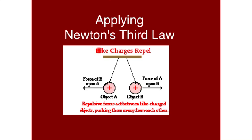We can apply Newton's third law to these situations. Remember, Newton's third law says for every action there is an equal and opposite reaction. Let's think about that in this situation where we have two like charges on object A and object B. Object A is going to exert a force of repulsion on object B, and object B is going to exert an equal and opposite repulsion force on object A.